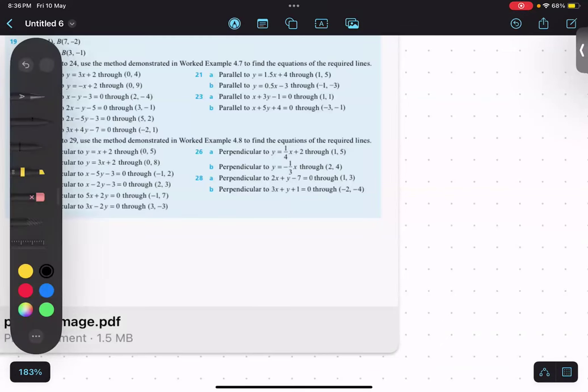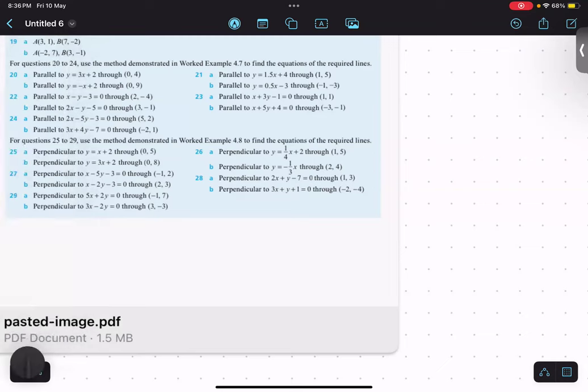So, let us start with the first question, that is 20th one. Parallel line to y equals 3x plus 2 and passing through (0,4).